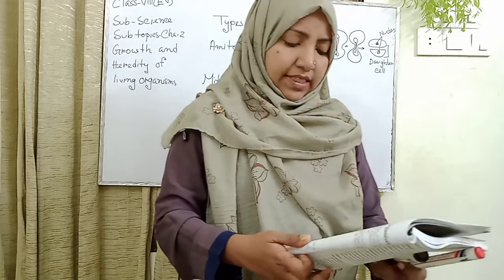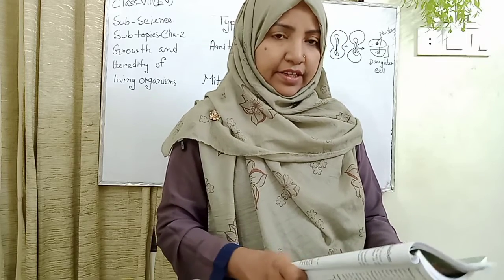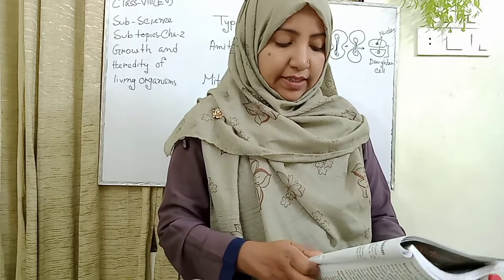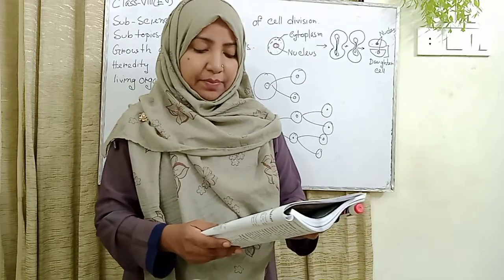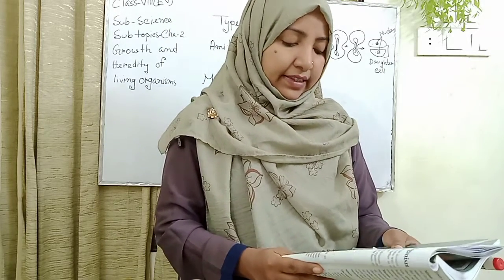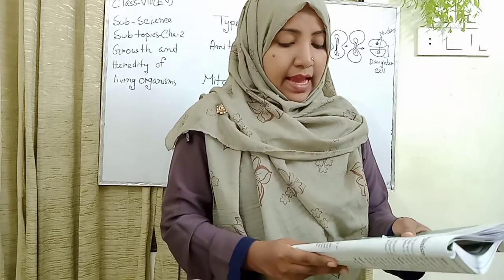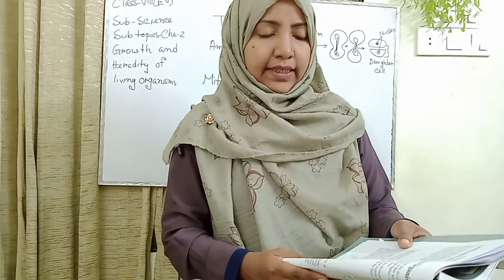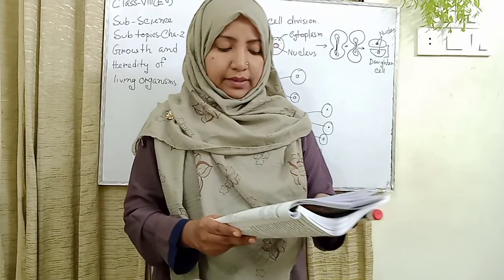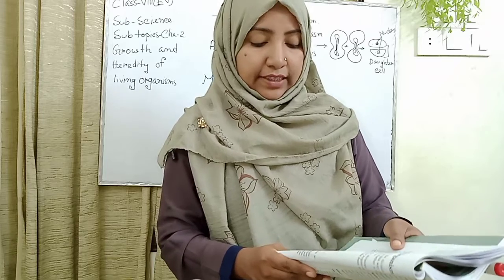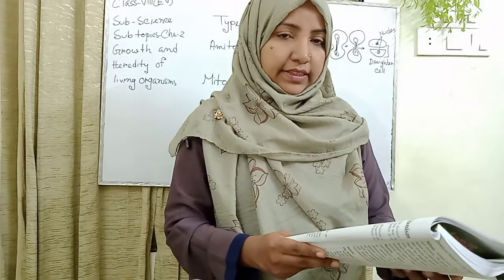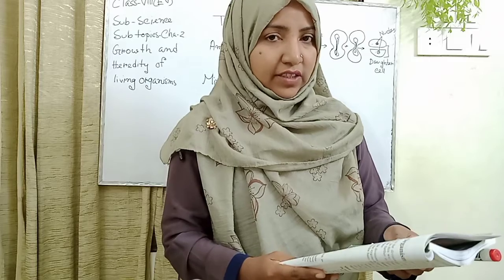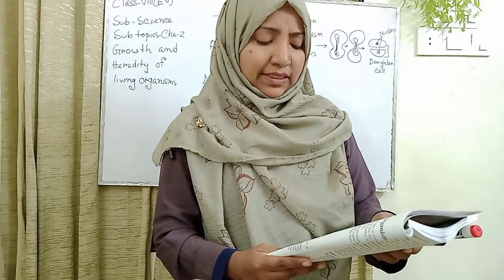Amitosis cell division occurs in bacteria, yeast, fungi, and amoeba. In prokaryotic cells, organisms reproduce through amitosis cell division. The nucleus elongates and becomes dumbbell-shaped, becoming slender in the middle, and then gets separated to form two nuclei. At the same time, the cytoplasm also elongates in the middle to form two cells. In this kind of cell division, the nucleus of the mother cell and the cytoplasm get directly separated to form two cells — hence it is called direct cell division, and its other name is amitosis.